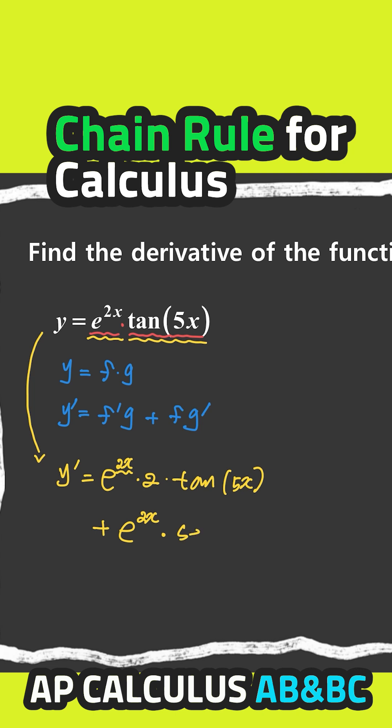The derivative of tangent is secant squared 5x times chain rule, derivative of 5x, which is 5. So that's going to be equal to 2 e to the 2x tangent 5x plus 5 e to the 2x secant squared 5x.